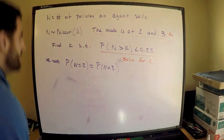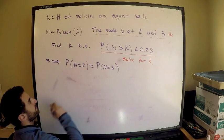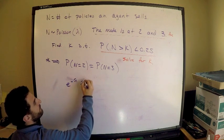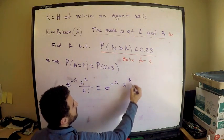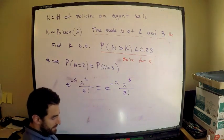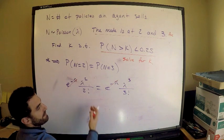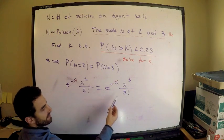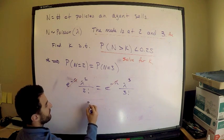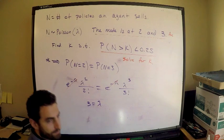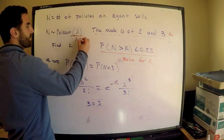We know this is a Poisson distribution, so I can immediately write down this equation. The probability mass function for Poisson gives us: e^(−λ) · λ² / 2! = e^(−λ) · λ³ / 3!. The nice thing about equations involving two Poisson mass functions is you always get cancellation. Multiply both sides by 3! (which is 6) and divide both sides by λ². We get 6/2 = 3, and λ³/λ² = λ, so lambda equals 3. The parameter is 3.